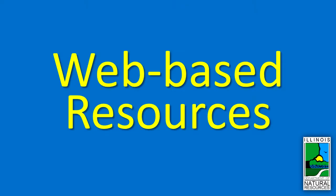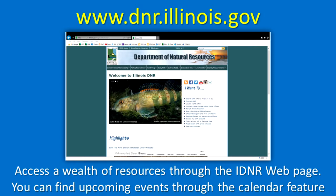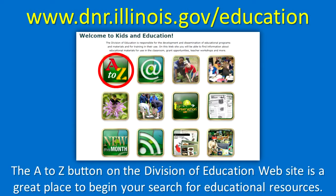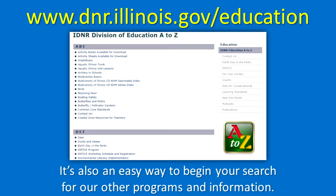Access a wealth of resources through the IDNR webpage. You can find upcoming events through the calendar feature, and a monthly update of educational information, among many other items of interest. The A to Z button on the Division of Education website is a great place to begin your search for educational resources and other programs and information.